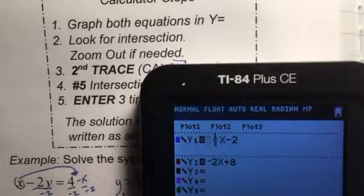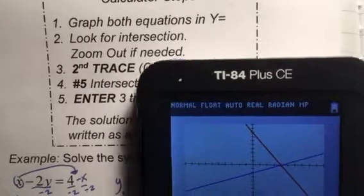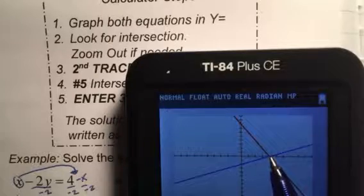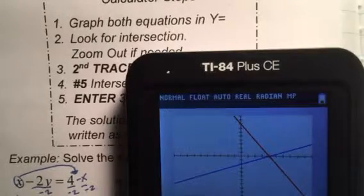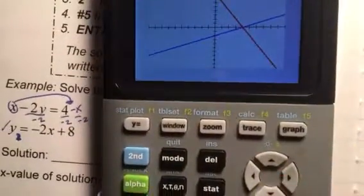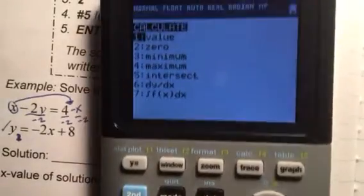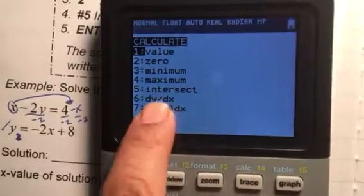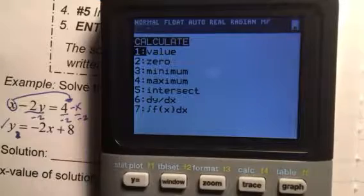The first thing is to actually press the graph to make sure that you can see the two lines intersect. Hopefully everybody can see that it intersects right here. Now what we're going to do is we're going to press 2nd, which is the blue button. We're going to press 2nd, trace. This screen will come up, and you want to press the number 5, because we're looking for the intersection.